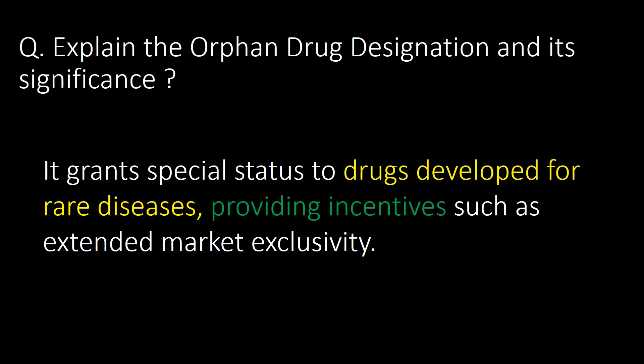Orphan drugs is a terminology commonly used for drugs that are used to treat rare diseases. Explain the orphan drug designation and its significance. It grants special status to a drug developed for rare diseases, providing incentives such as extended market exclusivity.